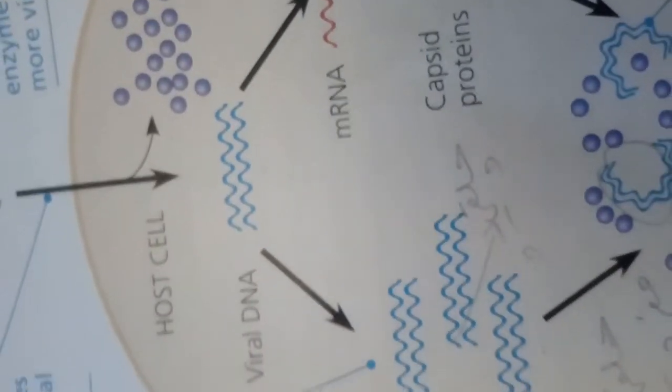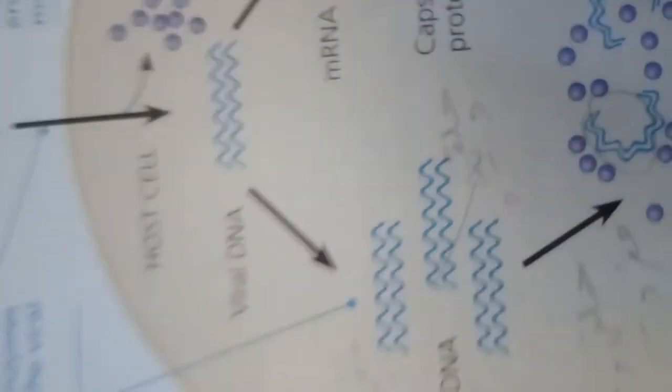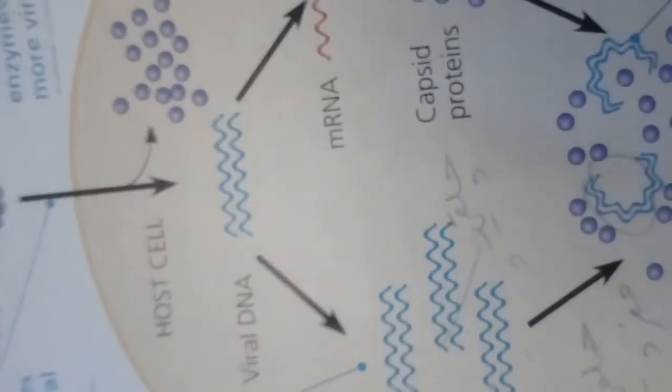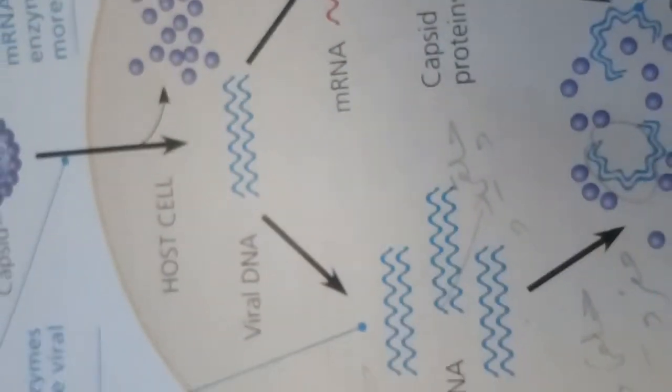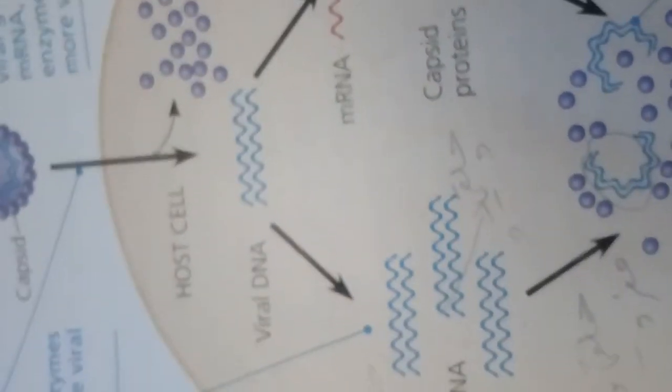Influenza viruses have an outer envelope studded with glycoprotein spikes. The genome consists of eight different RNA molecules, each wrapped in a helical capsid. General features of viral reproductive cycles: viruses are obligate intracellular parasites. They can reproduce only within a host cell.